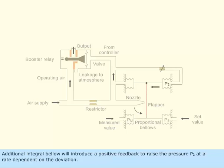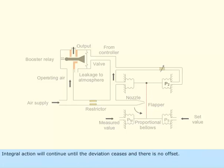Additional integral bellow will introduce a positive feedback to raise the pressure, P2, at a rate dependent on the deviation. Integral action will continue until the deviation ceases and there is no offset.